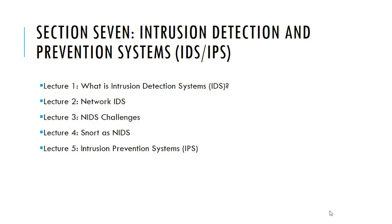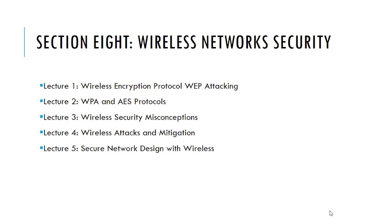Section 8 handles wireless network security. Lecture 1 tackles the wireless encryption protocol WEP, its attacking, and how this protocol is now obsolete. Lecture 2 introduces the advantages of WPA and AES protocols. When speaking about encryption protocols, we do not handle the mathematics but focus on protocols from the point of usage, advantages, and comparison. Lecture 3 handles wireless security misconceptions. Lecture 4 speaks about wireless attacks and how they can be mitigated. Lecture 5 shows how to secure a wireless network from the point of design and how to embed the wireless infrastructure securely inside the wired infrastructure.